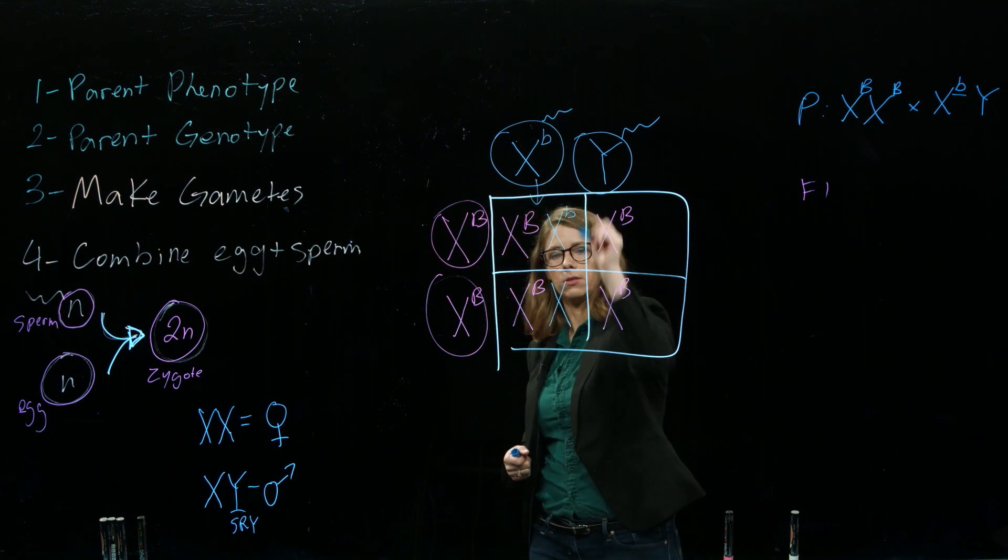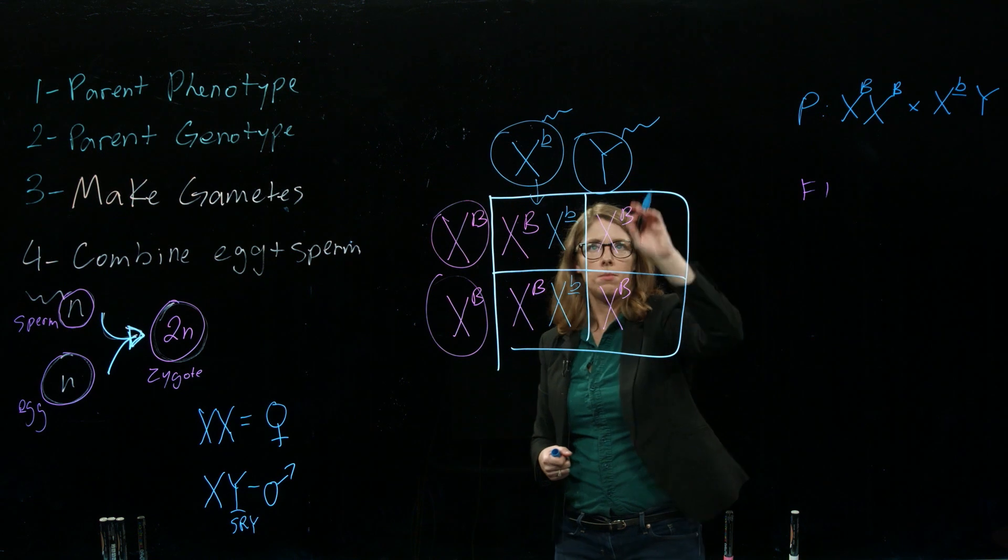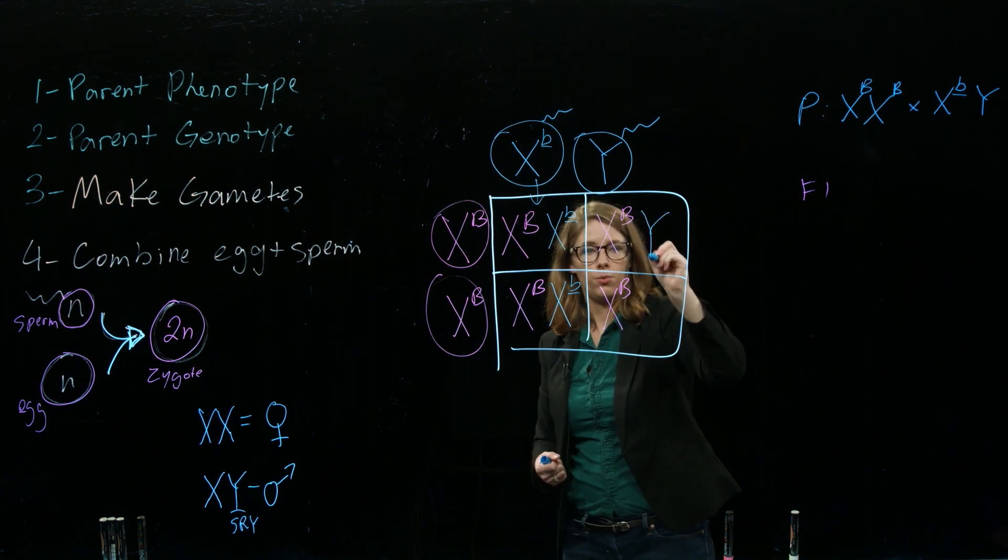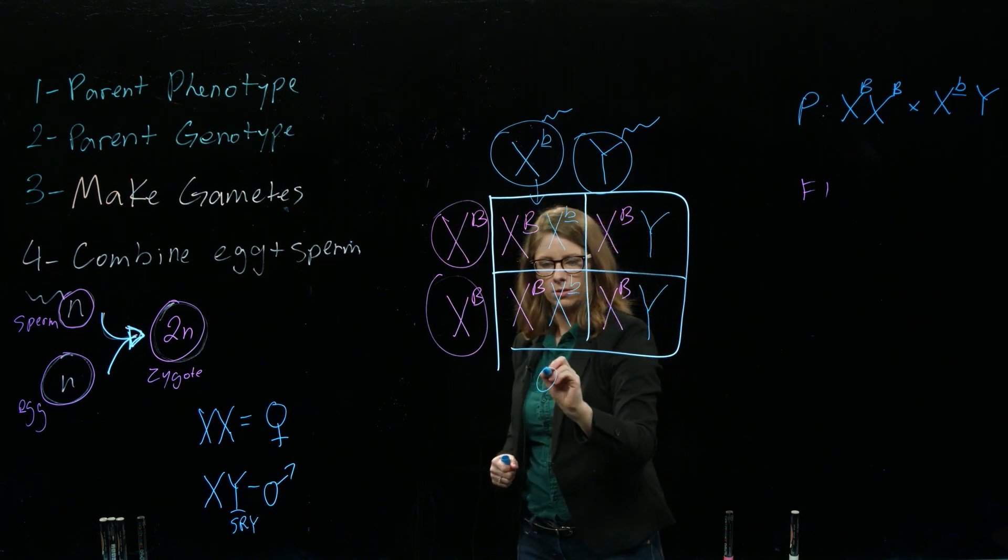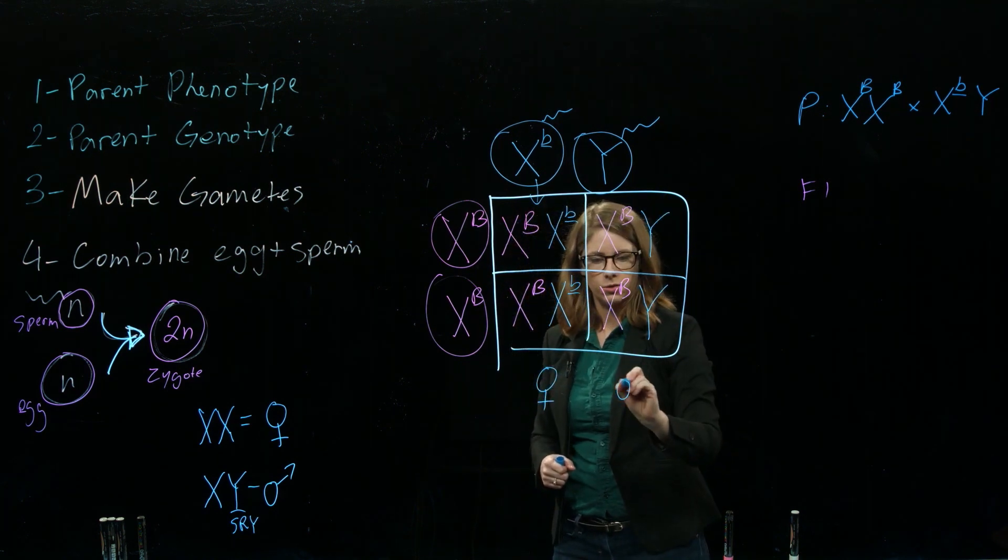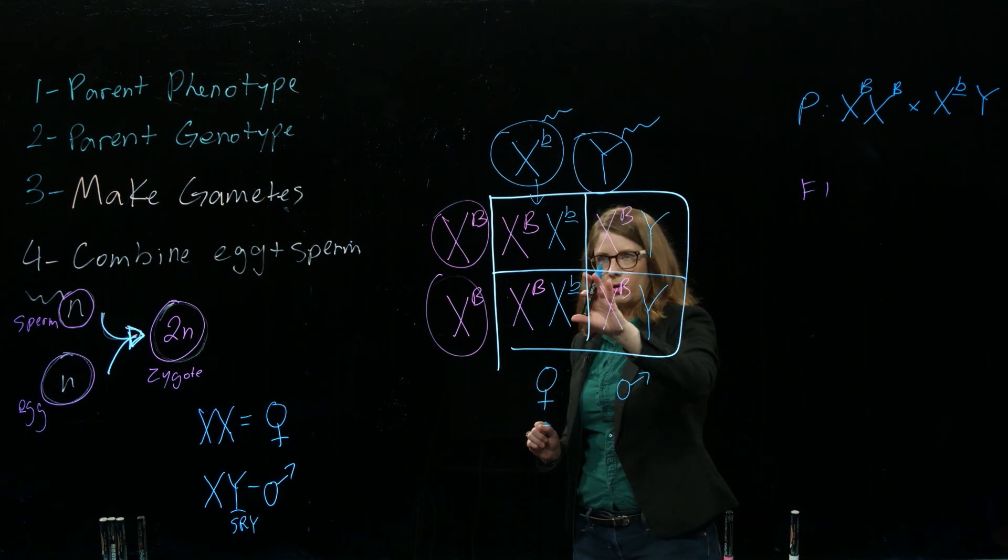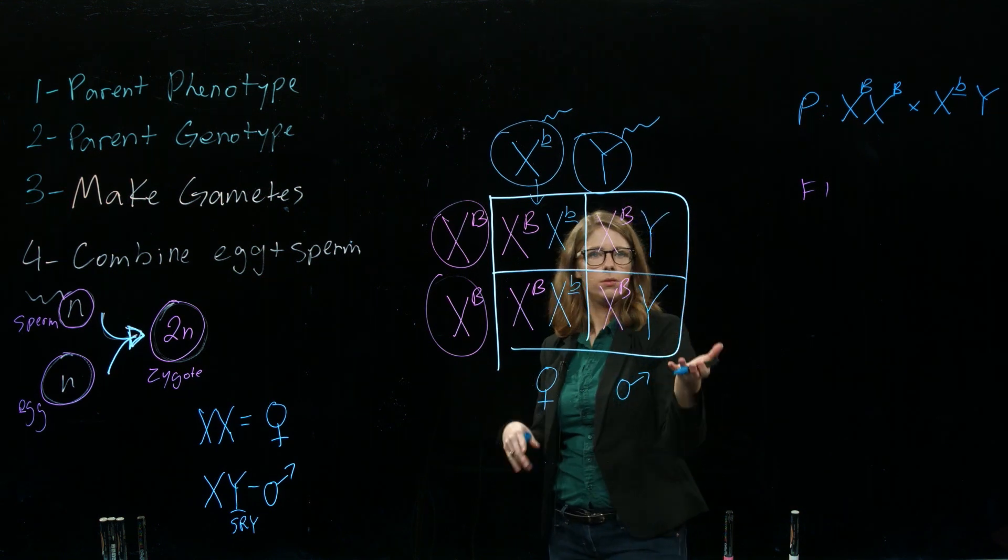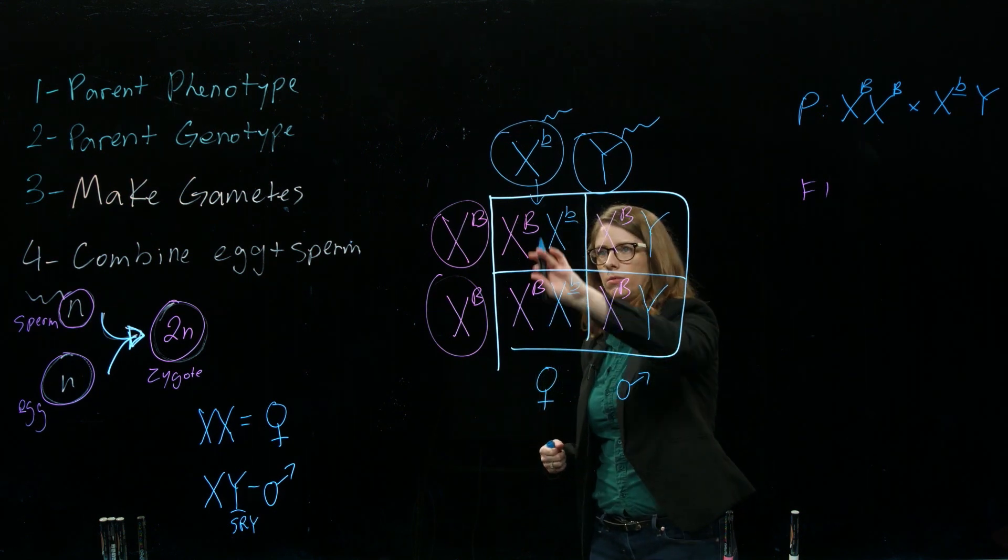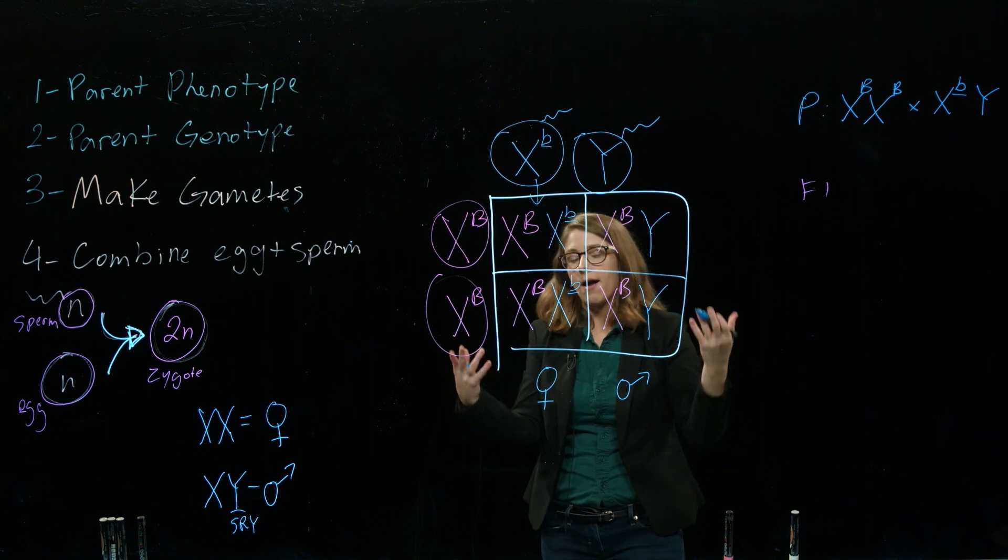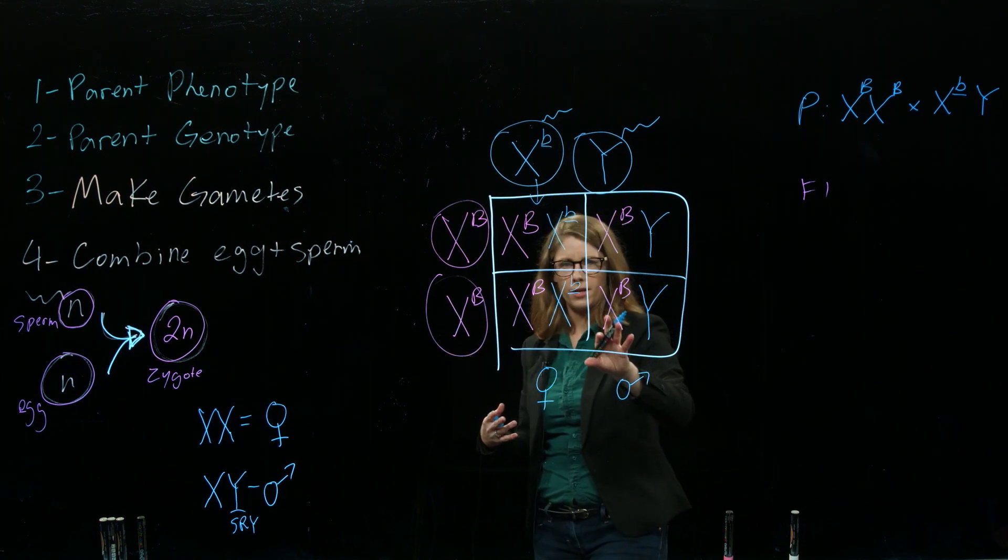So these are probably the daughters over here, these are probably the sons. So are any of these kids colorblind? No, they all have at least one dominant allele. All of them. So they all have color vision and can distinguish between red and green.